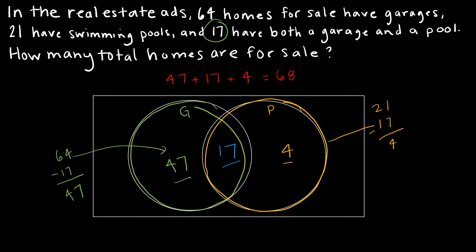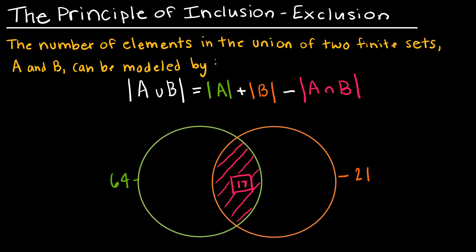I don't want to have to draw a Venn diagram and do that math every single time, so now let's look at the principle of inclusion-exclusion — how we would do this without having to draw a picture.